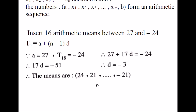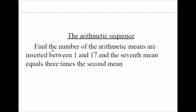Now you know the first term A and D, so you can find the other terms of the sequence. Start by A: 27 plus negative 3 gives 24; 24 plus negative 3 gives 21, and so on. To find the last arithmetic mean, take the last term minus the common difference D: negative 24 minus negative 3 equals negative 21. Therefore the arithmetic means are 24, 21, and so on up to negative 21.